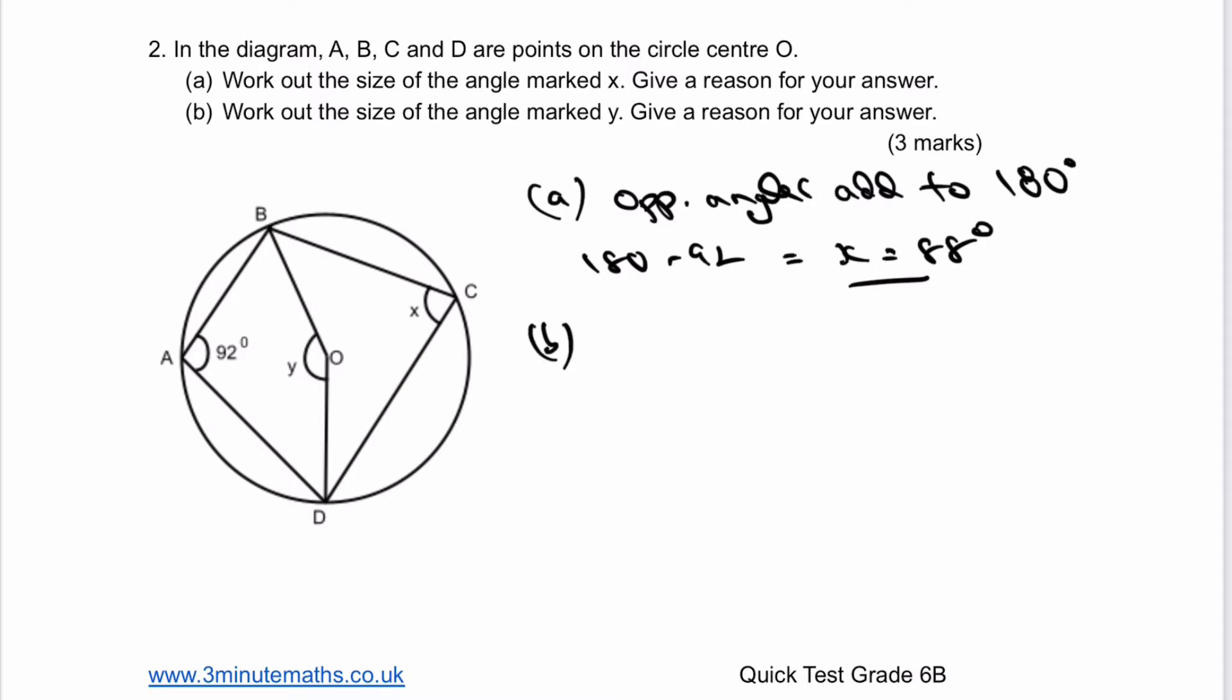With part B, we need to know that the angle at the centre is twice the angle at the circumference. Hopefully your writing will be a little bit easier to read than mine. So if I know the value of X is 88 degrees, which I've worked out in part A, then Y is going to be equal to two lots of X, which is two times 88, and that's going to give me 176 degrees.